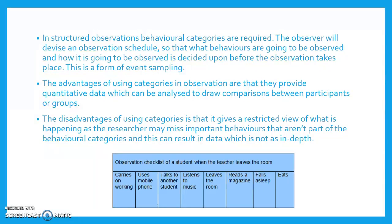The advantages of using categories in observation are that they provide quantitative data which can be analyzed to draw comparisons between participants or groups. The disadvantages are that it gives a restricted view of what is happening, as the researcher may miss important behaviors not part of the behavioral categories, resulting in data which is not as in-depth. Here is an example of an observation checklist if you want to have a look at that.